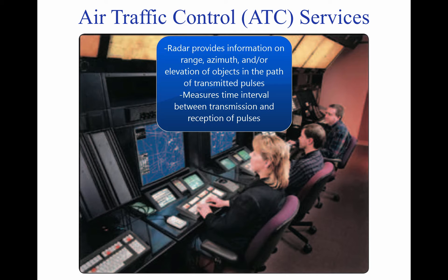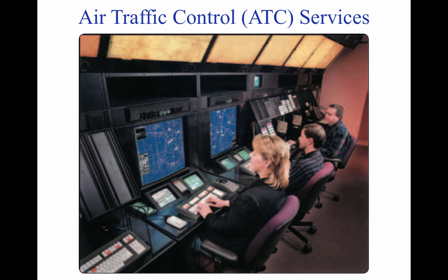Range is determined by measuring the time it takes for the radio wave to go out to the object and then return to the receiving antenna. The direction of a detected object from a radar site is determined by the position of the rotating antenna when the reflected portion of the radio wave is received. Modern radar is very reliable and there are seldom outages, due to reliable maintenance and improved equipment.